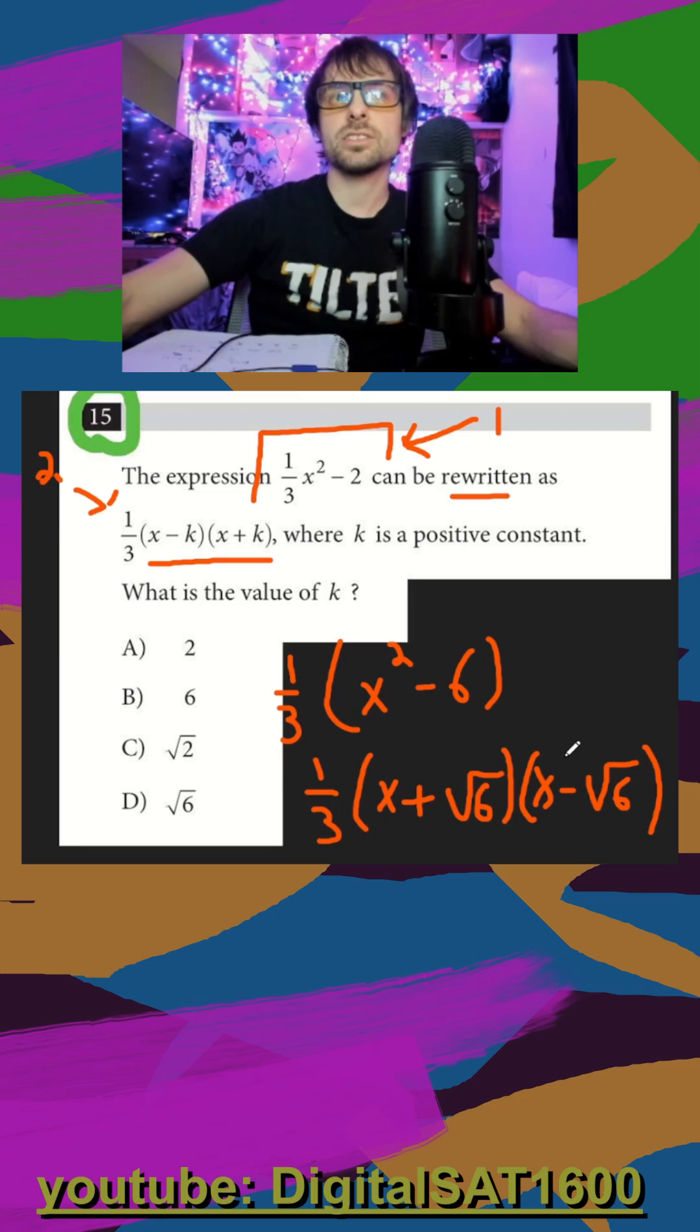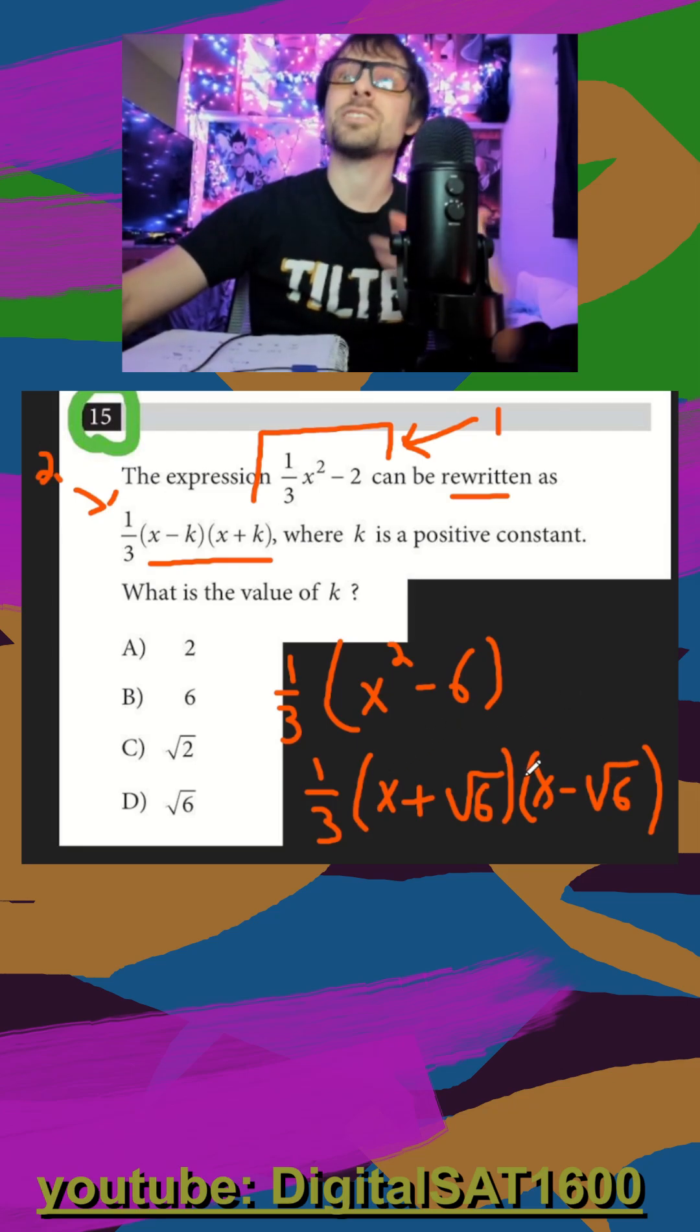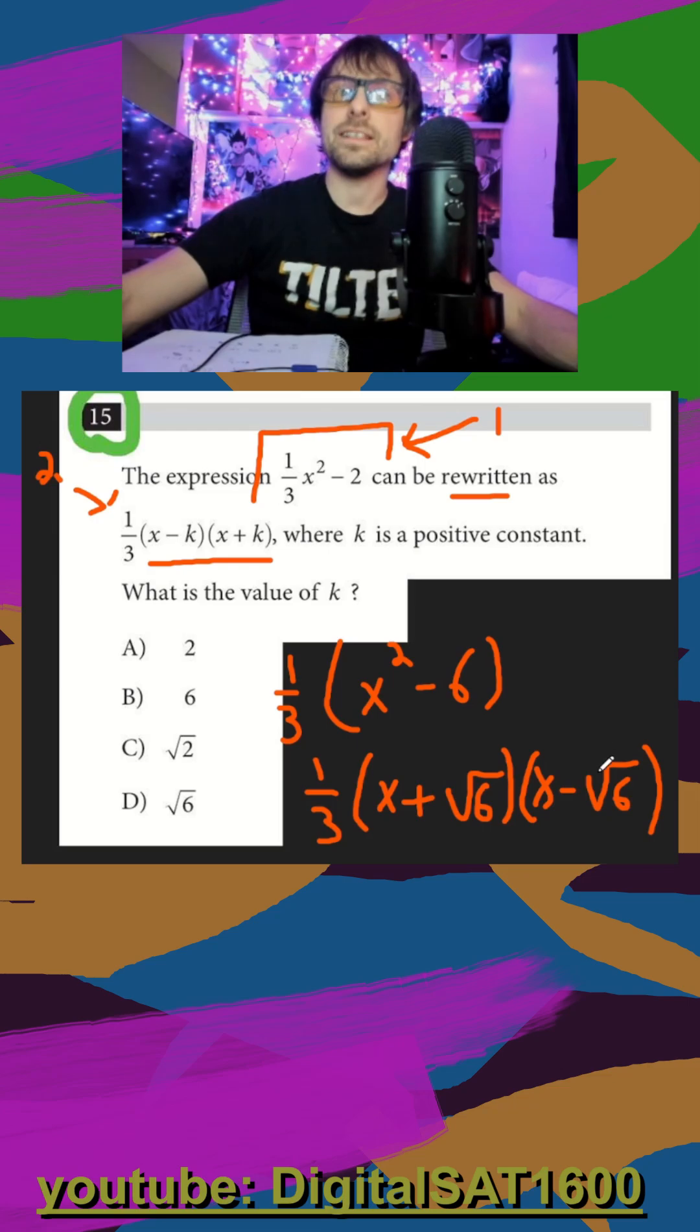The reason why this works is because my x squared minus square root of six x plus square root of six x, so your middle terms cancel out, and then square root of six times square root of six is six, right? So it's really not that bad to do by hand.